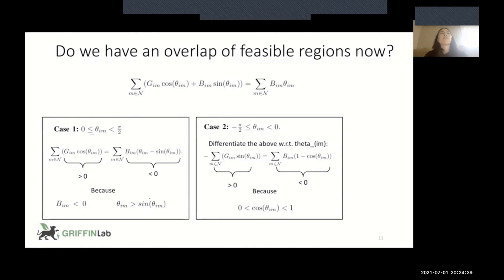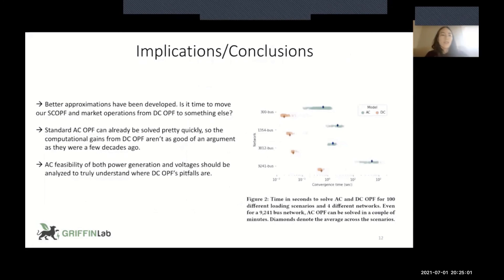So you might think, well, the generation is really what matters, who cares about the angles. But if you read some of those papers that I cited earlier, those angles are used to calculate line flows, are used to calculate congestion, market prices are used to determine whether or not we're turning lines on or off and optimal transmission switching. It also matters if those thetas are AC feasible, not just the generation values.